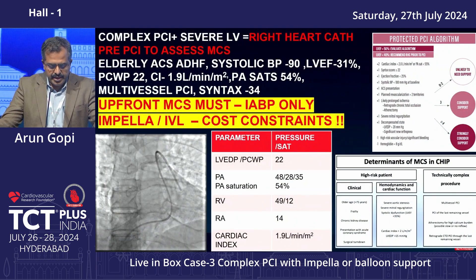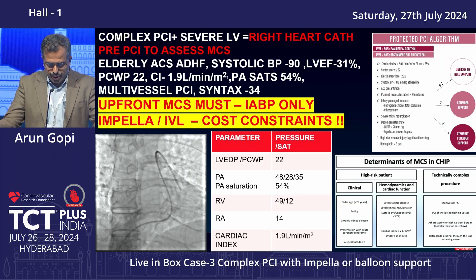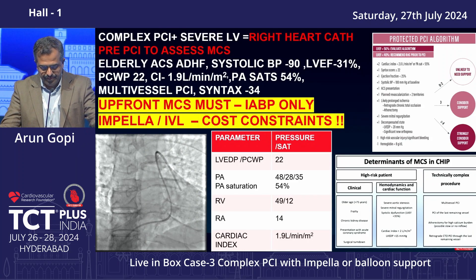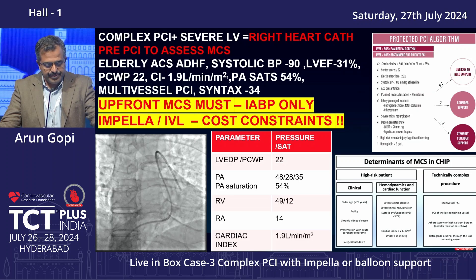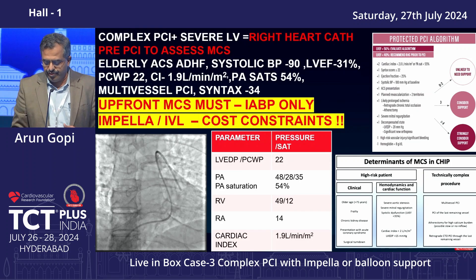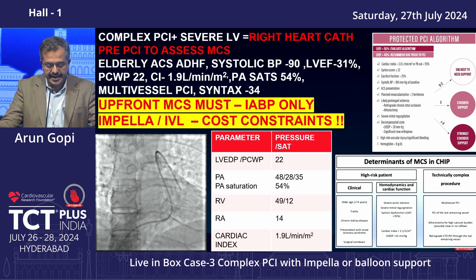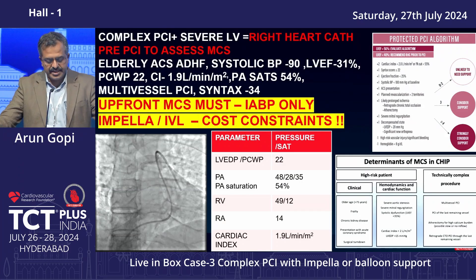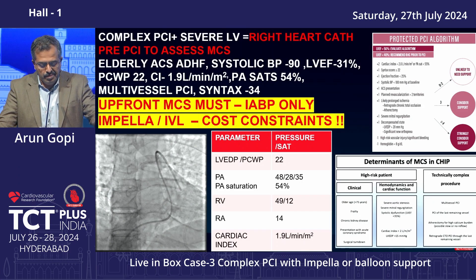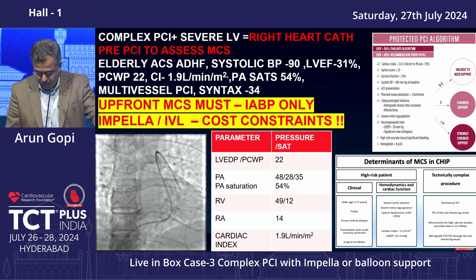Since it was a complex PCI with severely depressed LV systolic dysfunction, we first did a right heart cath to assess the need for mechanical circulatory support. LV EDP was 22, PA pressures were 48, mean PA pressure was 35, PA sats were 54%, RV pressure was 49, RA was 14, and cardiac index was 1.9. The patient had multiple risk factors: elderly, in ACS, decompensated heart failure, systolic BP 90, EF 31%, wedge 22, cardiac index 1.9, PA sats 54%, requiring multi-vessel PCI, SYNTAX score 34. This is a clear indication for MCS. Due to financial constraints they could not afford an Impella, so we went ahead with IABP.